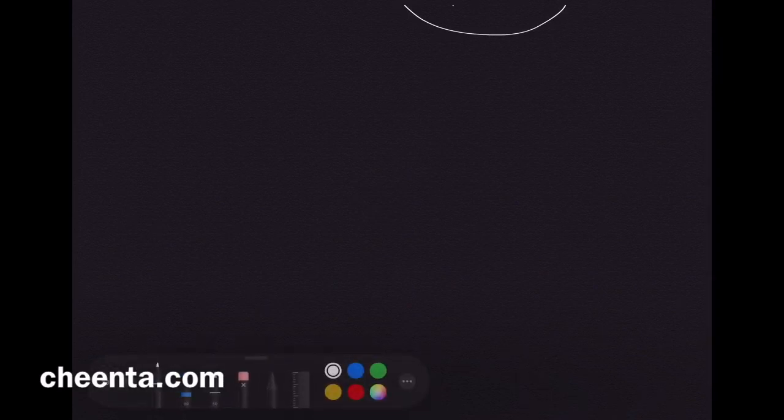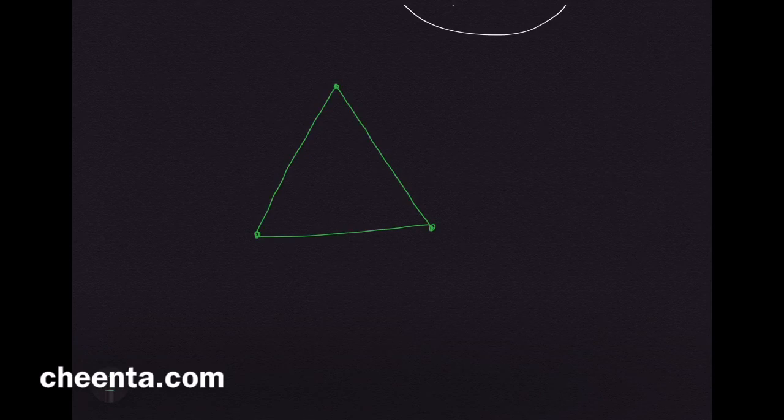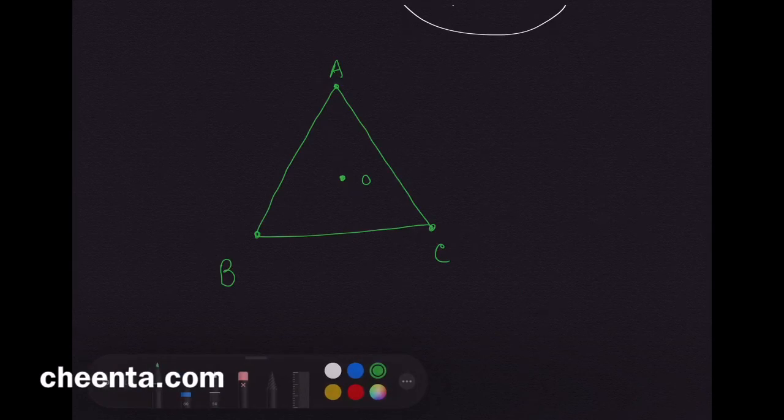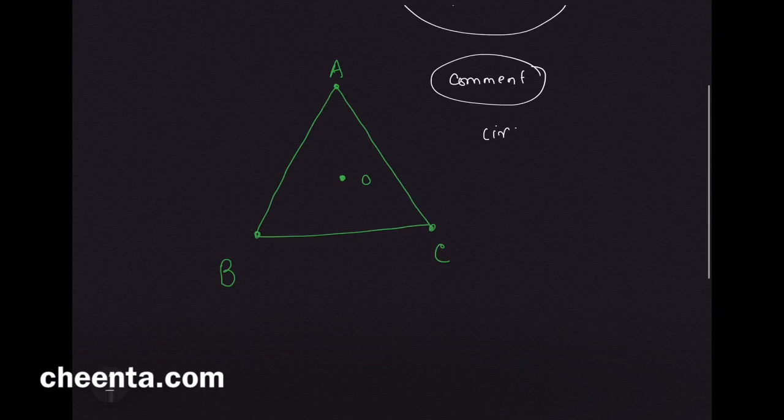What is this problem from the ISI entrance? We start with an equilateral triangle, let's call it ABC, and O is the circumcenter of this equilateral triangle. To find the circumcenter, it's the same as the centroid because the triangle is equilateral.